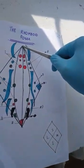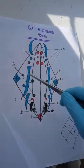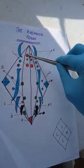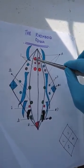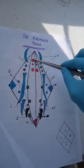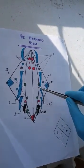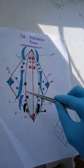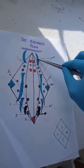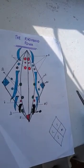We have the inferior angle and two lateral angles. The red color shows the motor nuclei, the green color shows the autonomic nuclei, and the blue color shows the sensory nuclei.